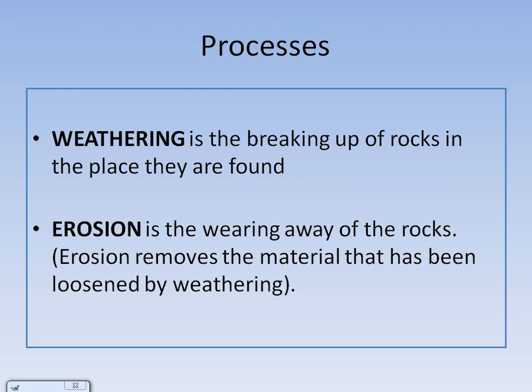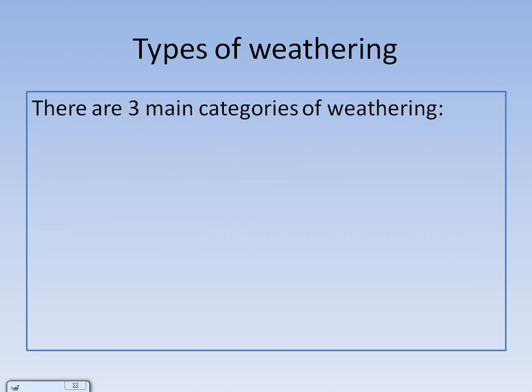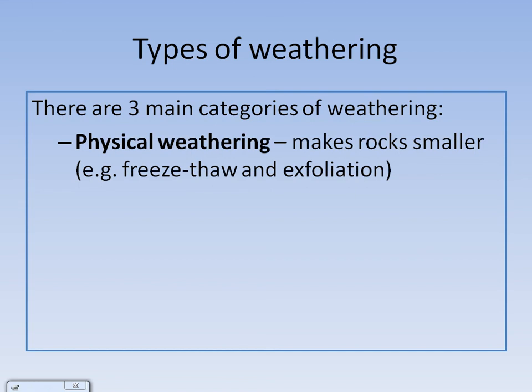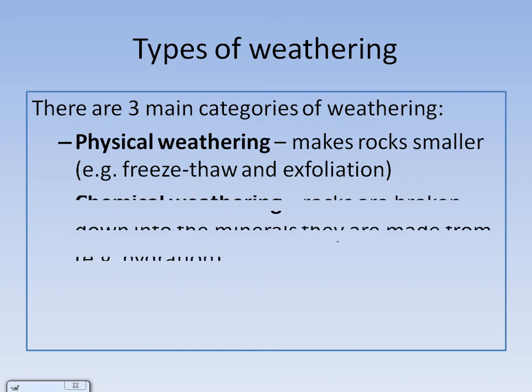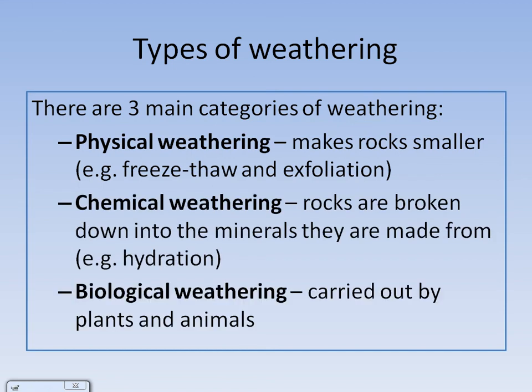Let's look at weathering processes first. There are three types of weathering: physical weathering, chemical weathering and biological. Physical includes freeze-thaw and exfoliation, and this is when rocks are made smaller.